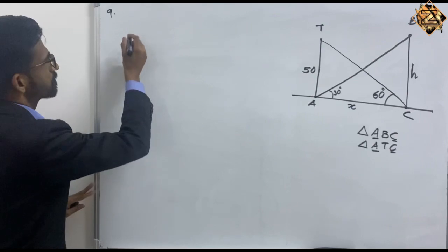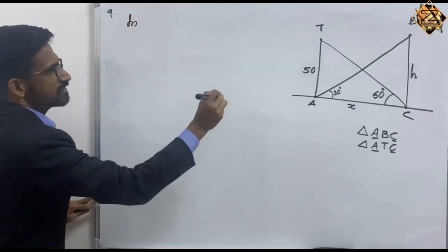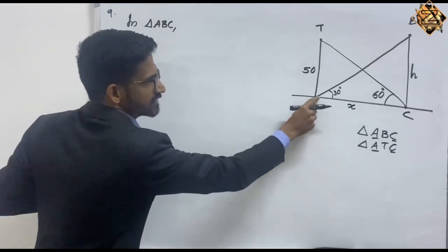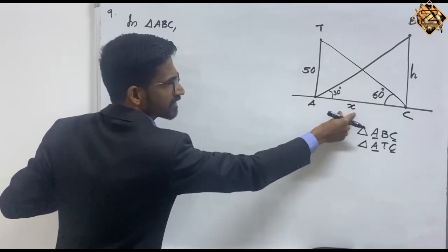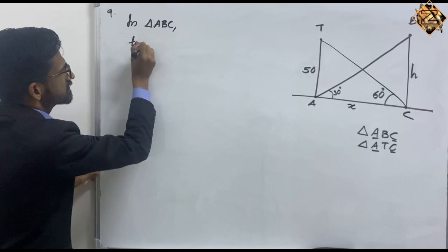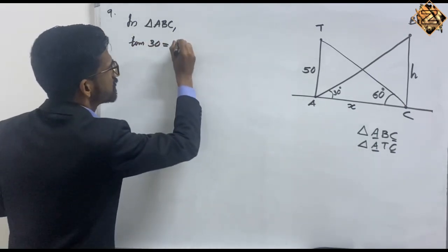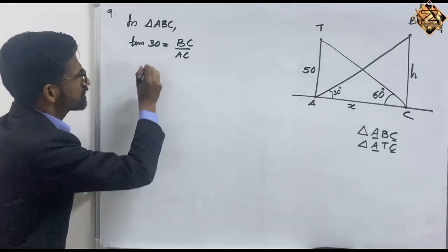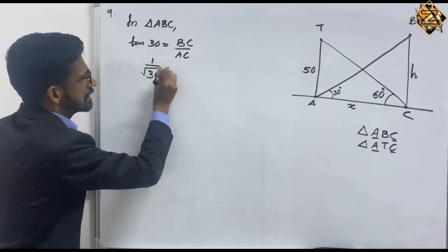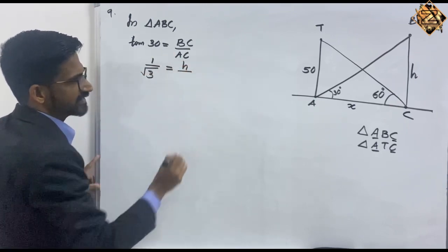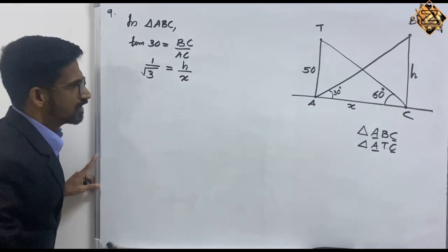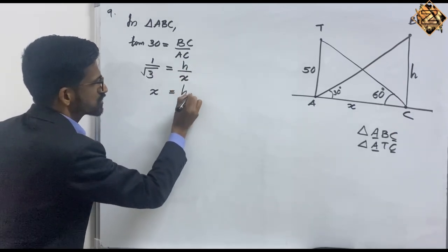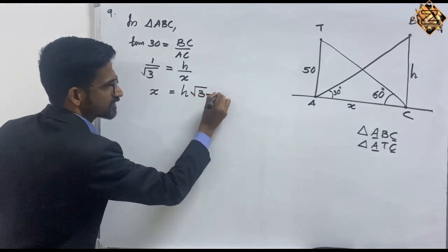Let's look at the solution. In triangle ABC, tan 30 equals opposite by adjacent, that is BC by AC. The value of tan 30 is 1 by root 3, equal to H by X. We take X to the other side and root 3 to the numerator, so X equals H root 3. Take this as equation 1.